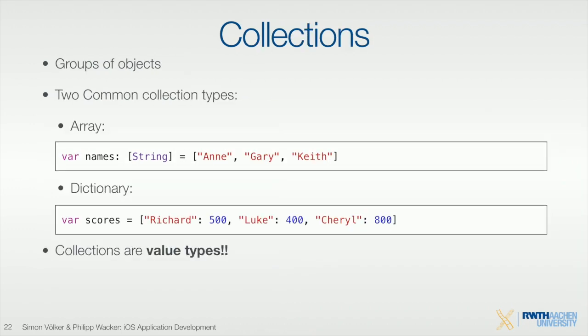Let's talk about collections — the common ones are arrays, dictionaries, but there are also maps, sets, and others you probably know. An array is pretty simple — you define it with square brackets, say it should be a string array, and list the values. It always stores values of one specific type. You can use the any type to take any object, but then you'd have to cast everything, which gets messy.